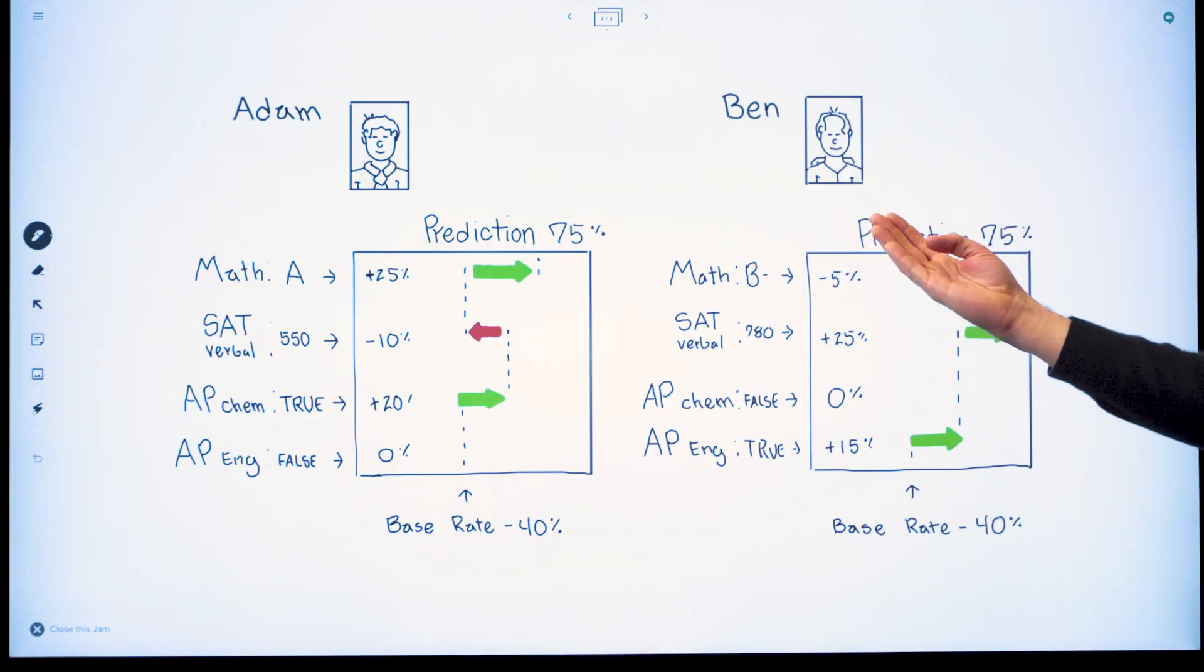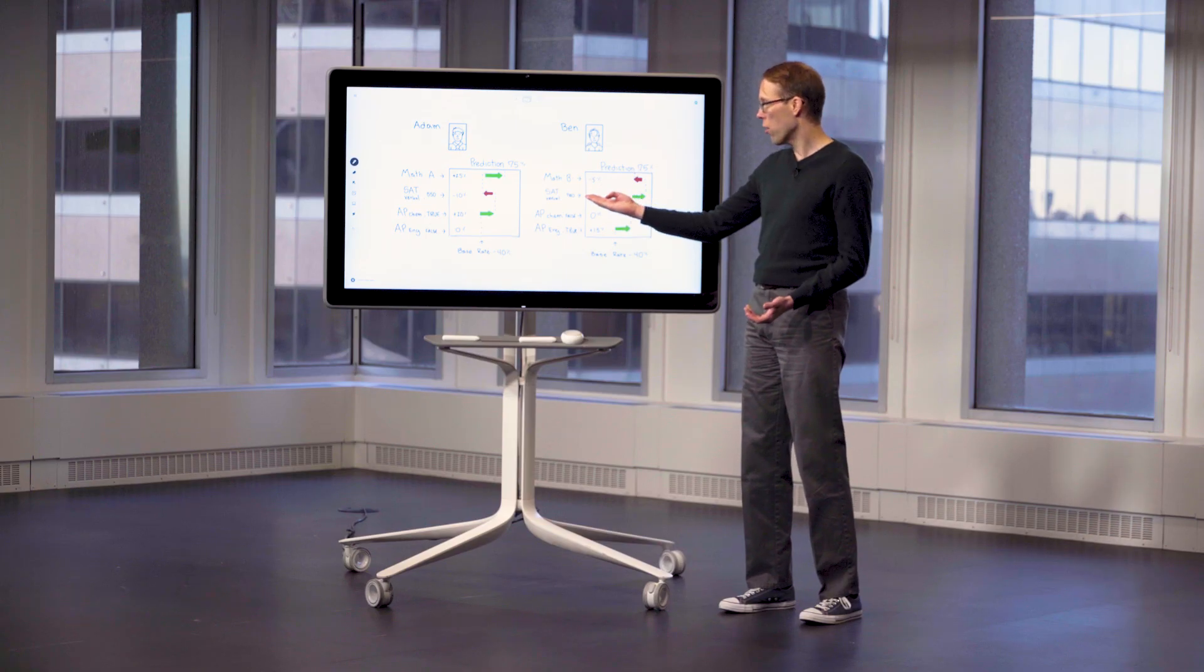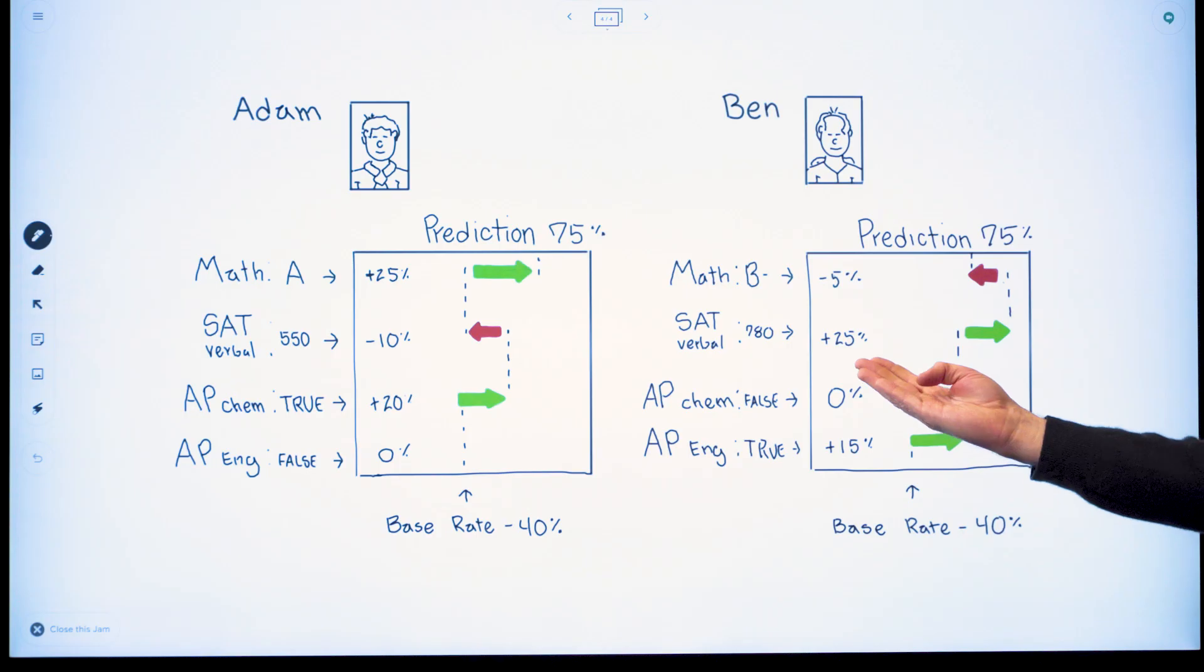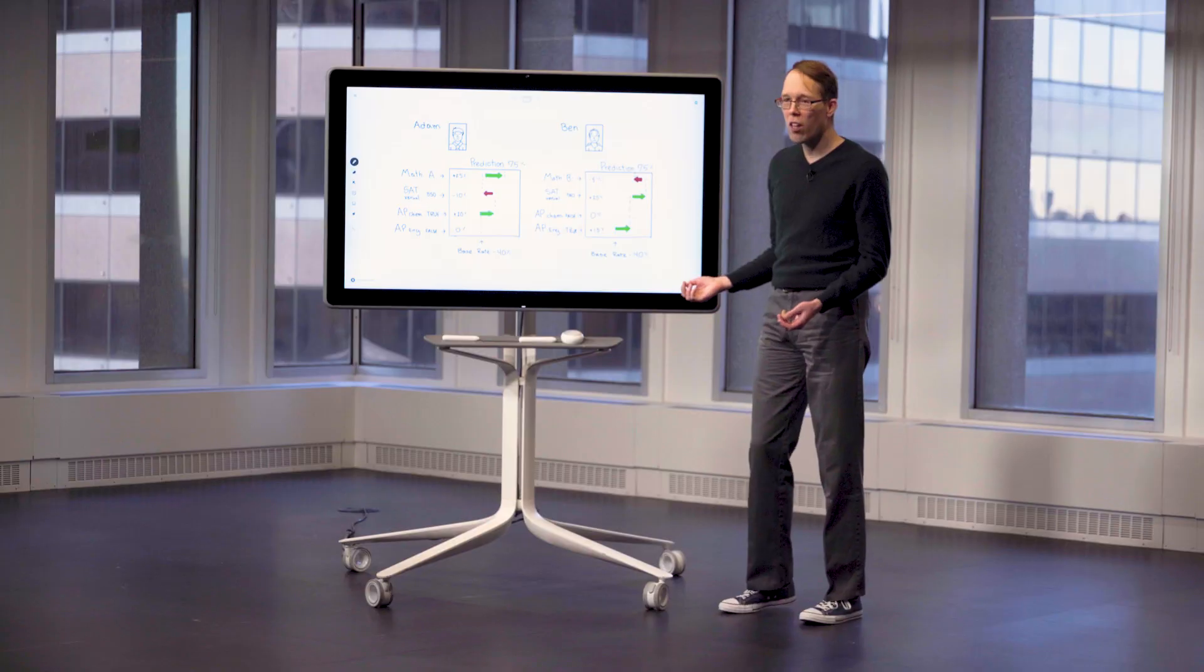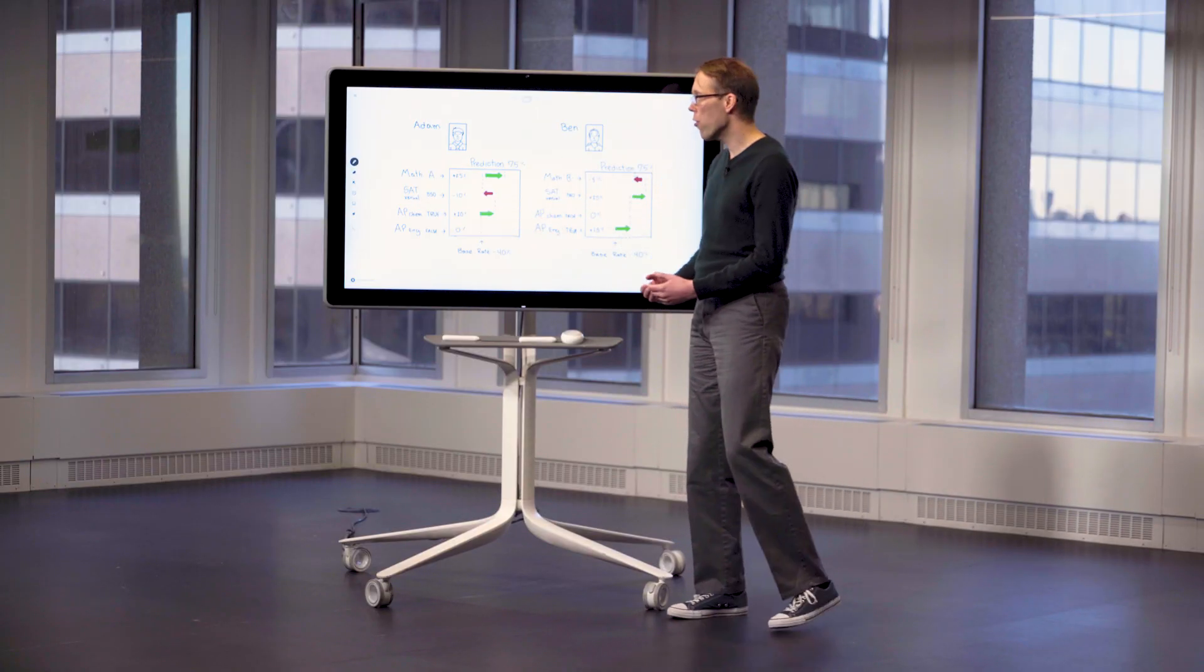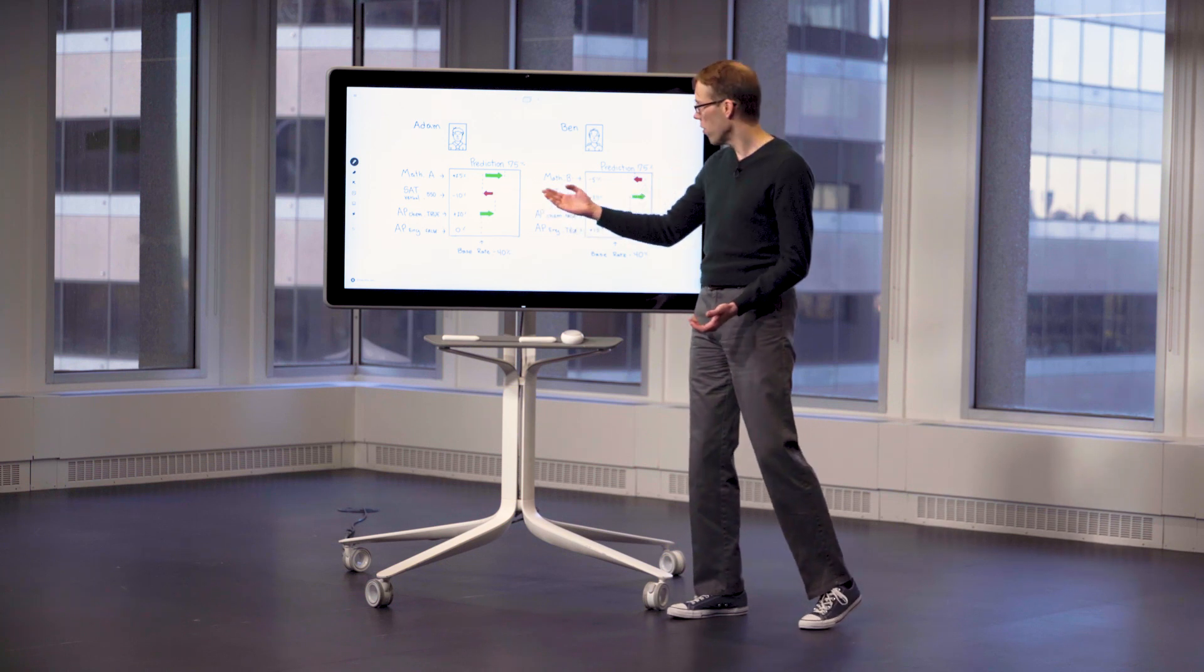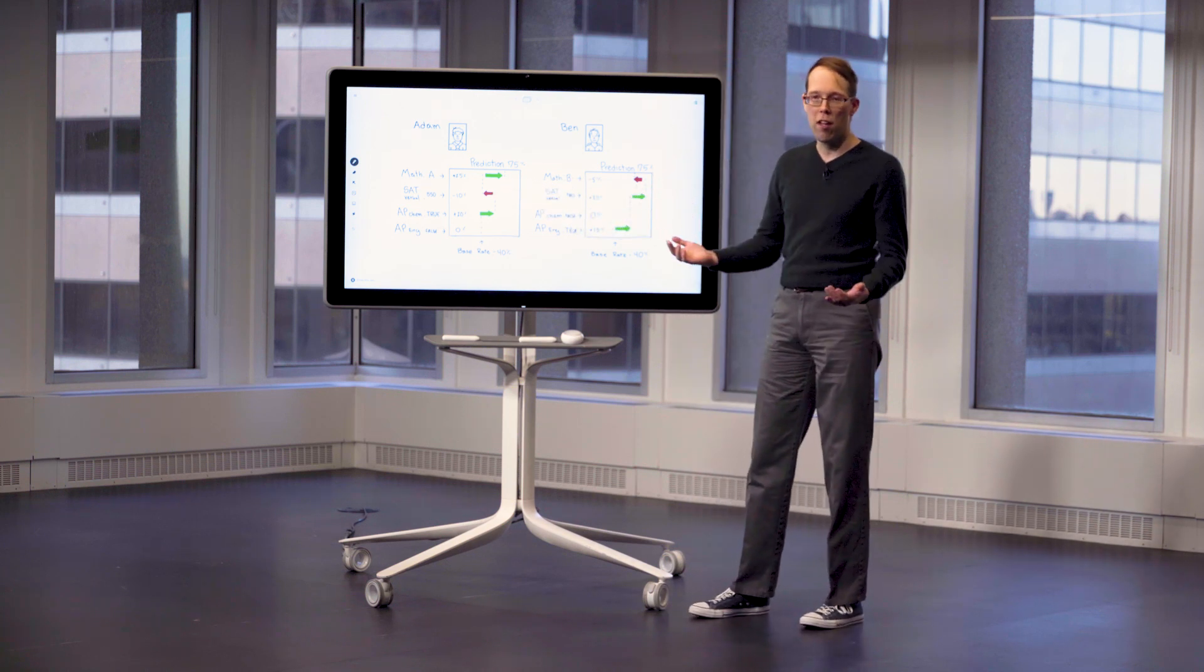But in the case of Ben, we see a positive influence from SAT verbal score and AP English, but some minus contribution from middle-of-the-road math grades. By looking at these different Shapley values, their advisor knows now to keep an eye on Adam's progress in writing classes and Ben's progress in math classes.